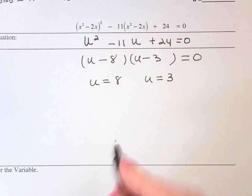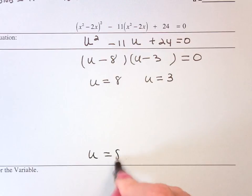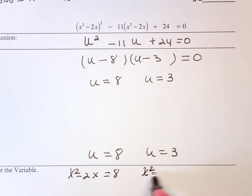Again, I'm going to bring this down here. My replacement is u is x squared minus 2x equals 8, and x squared minus 2x equals 3.